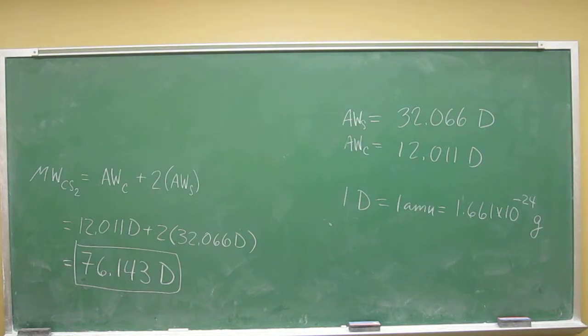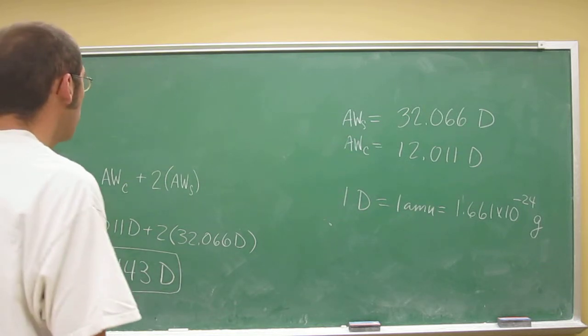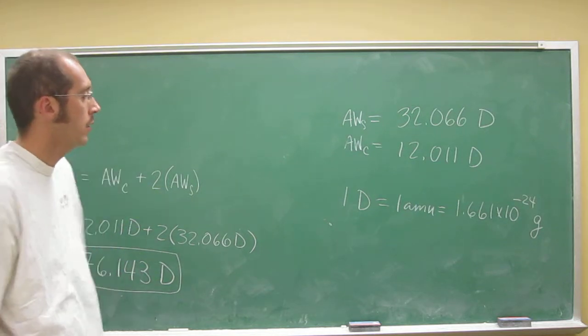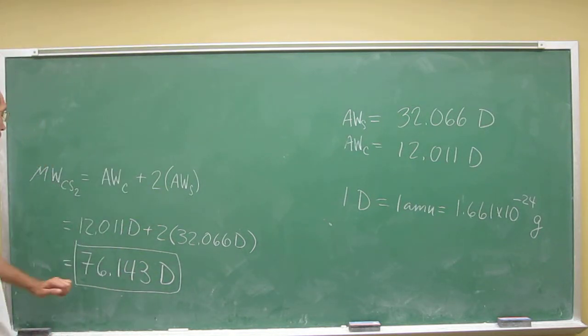So remember your conversion, how to do conversion factors from unit one. You can just take this number here and convert it to grams. We've got the mass here in Daltons. We just need the mass in grams.